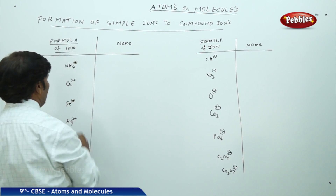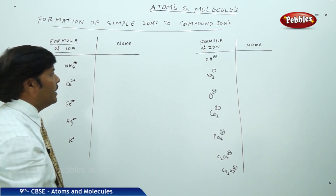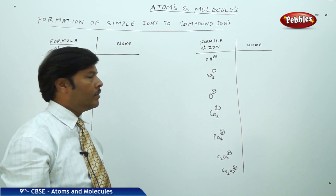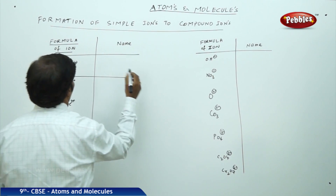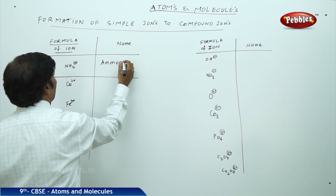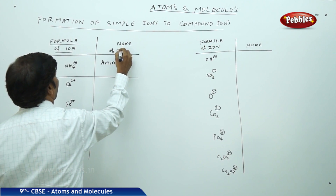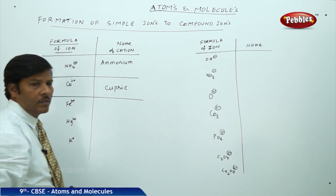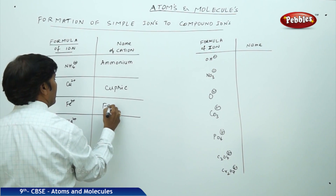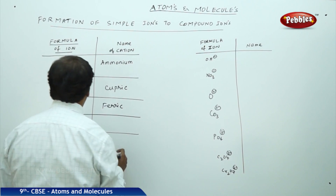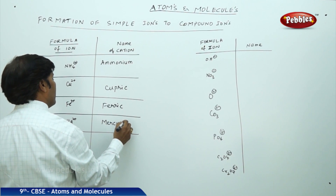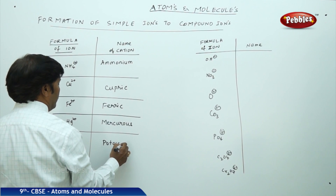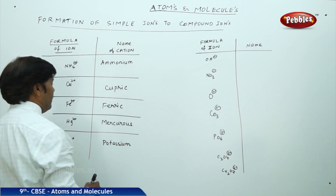Prepare two tables for cationic and anionic ions. Cationic ions carry positive charge; anionic ions carry negative charge. For cation names: NH4+ is ammonium cation; Cu2+ is cupric; Cu+ is cuprous; Fe3+ is ferric; Fe2+ is ferrous; Hg2+ is mercuric; and K+ is simply potassium cation.